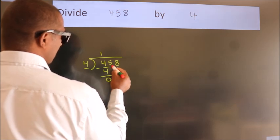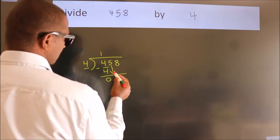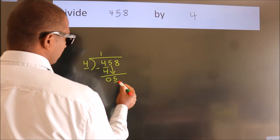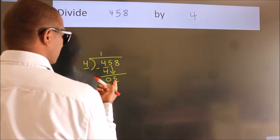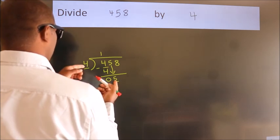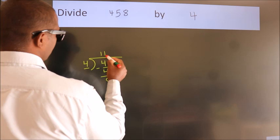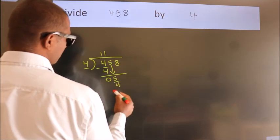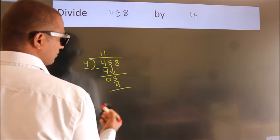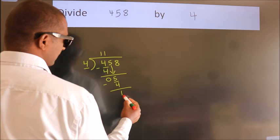After this, bring down the next number, so 5 comes down. A number close to 5 in the 4 table is 4 once, 4. Now we subtract and get 1.